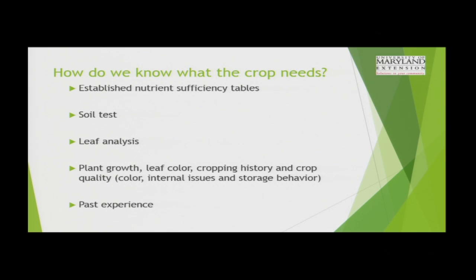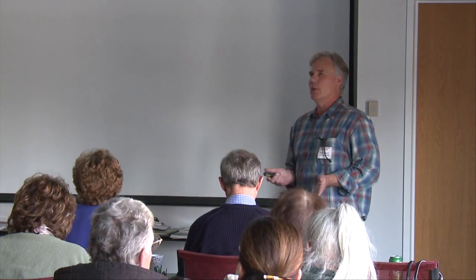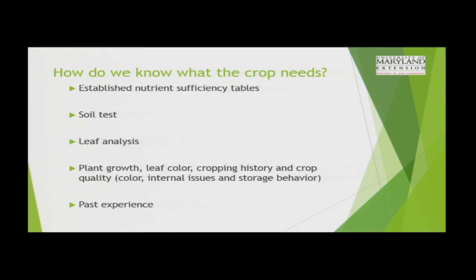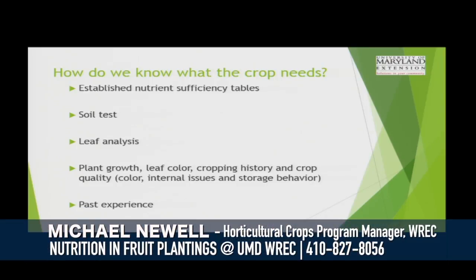We use soil tests and leaf analysis to determine what the crop needs. What we like to call the eye test is how well does the plant actually look when you look at it? Is it making the correct amount of vegetative growth to keep the tree productive? What is the color of the leaves? These are things you can visually see. What's the cropping history — has it been low cropping or over-cropping, which would affect the nutrient use of the plant? What's the color of the fruit? Is your nice red Gala sport not as red as you hoped? That could all be nutrient related.